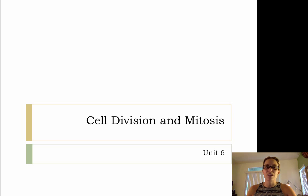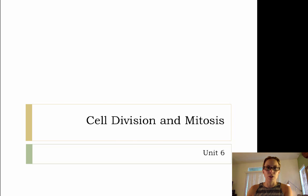There are other types of organisms out there that don't reproduce sexually — they reproduce asexually. We're going to take a look at how prokaryotic cells or bacteria reproduce. Prokaryotic cells reproduce by a process called binary fission.